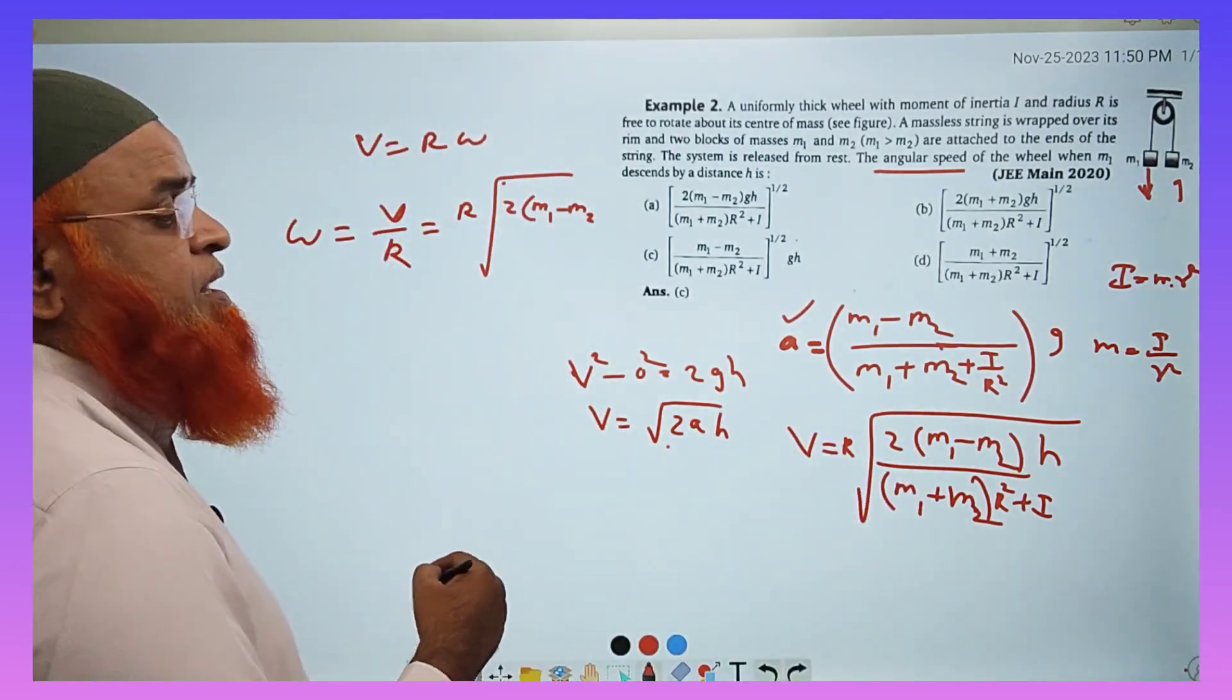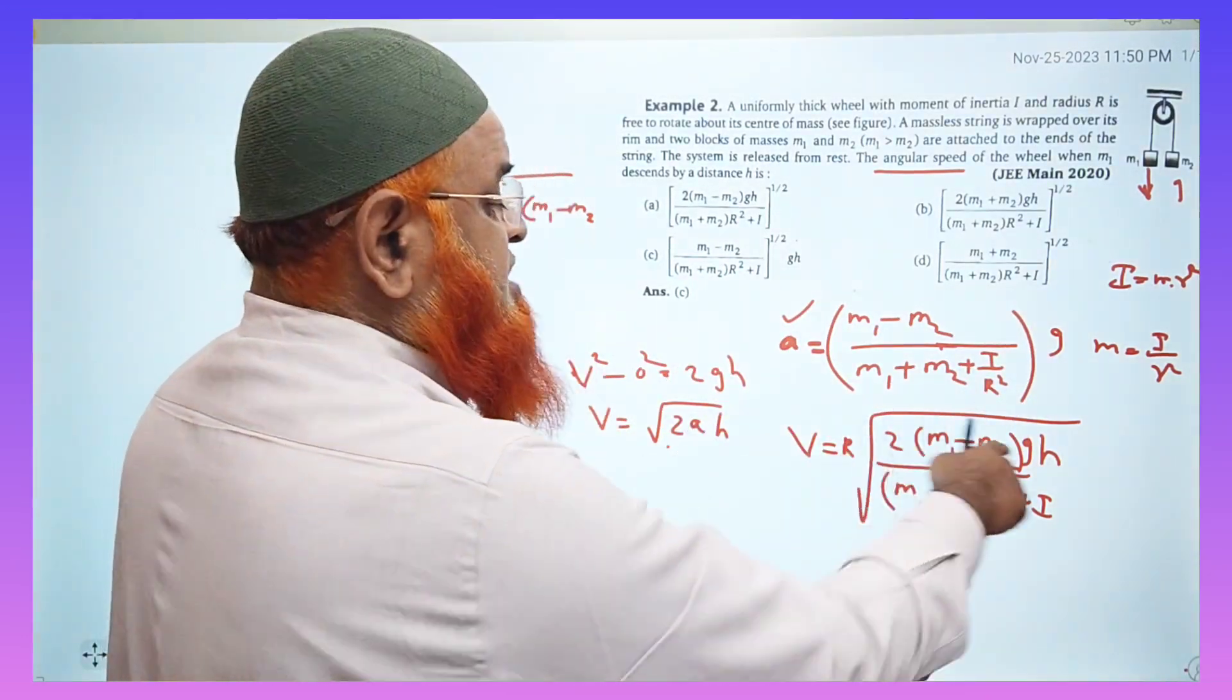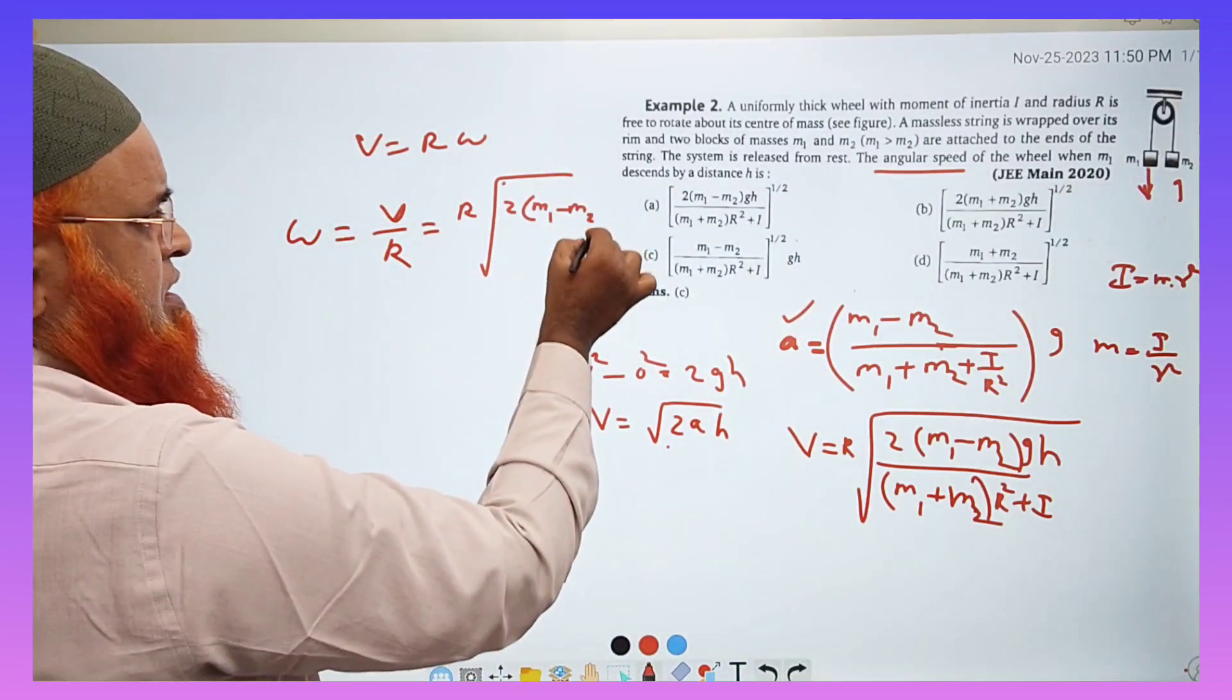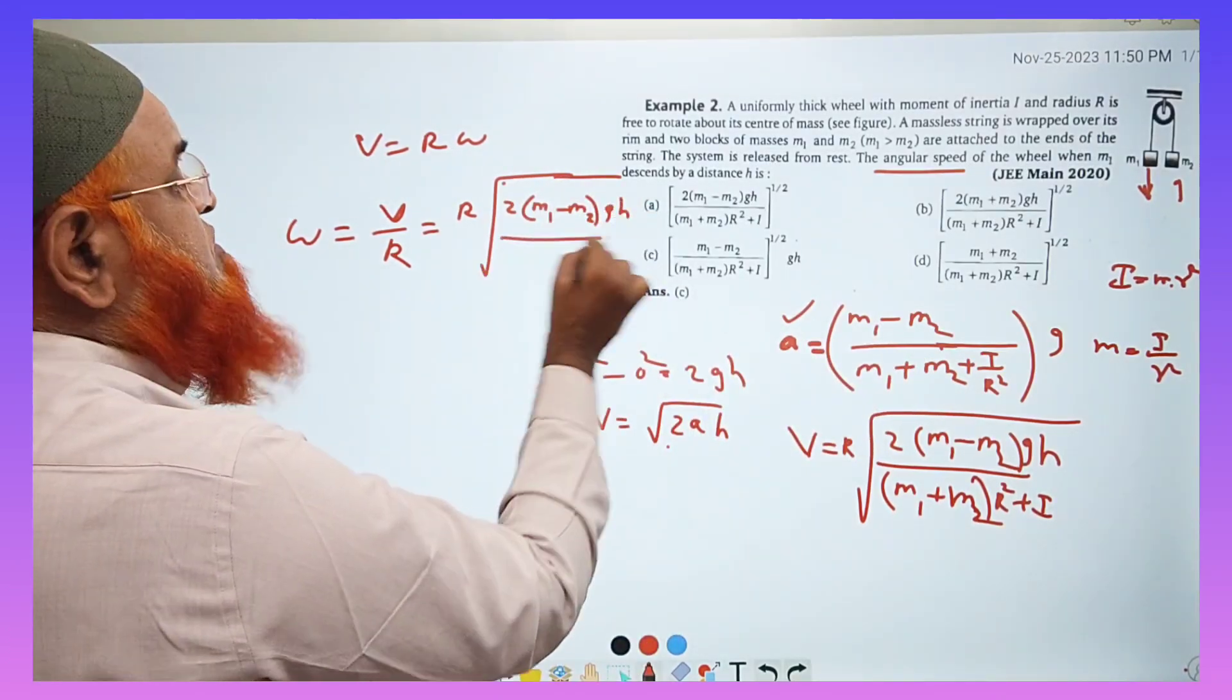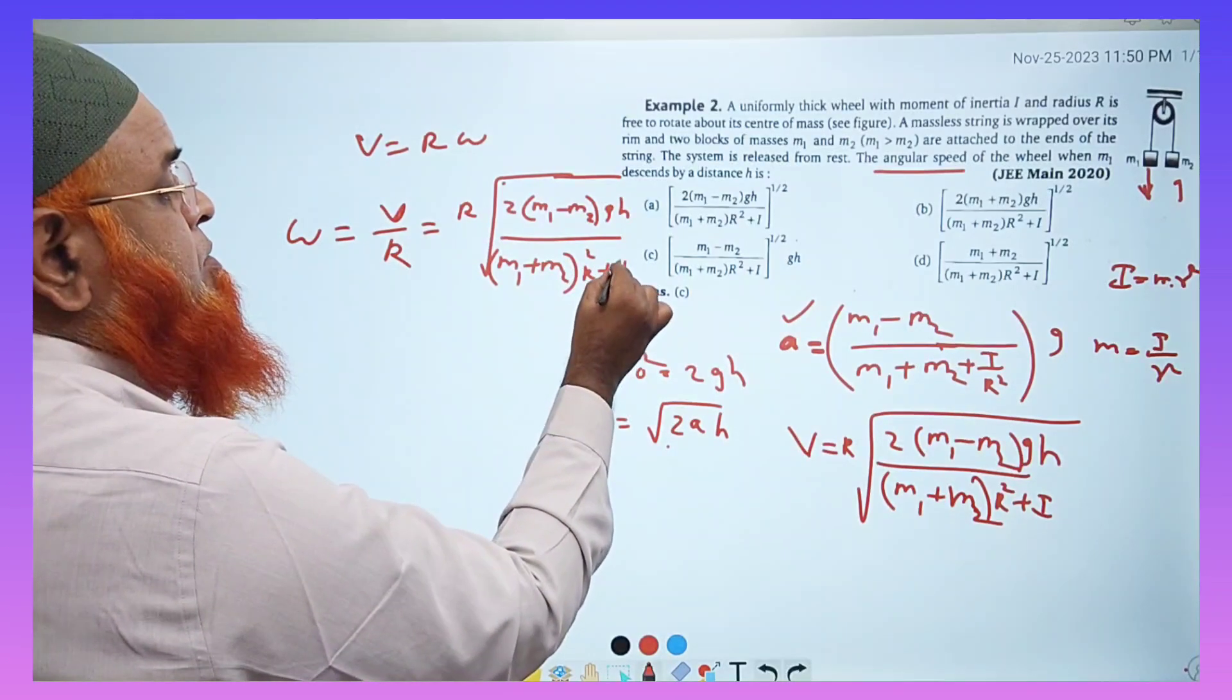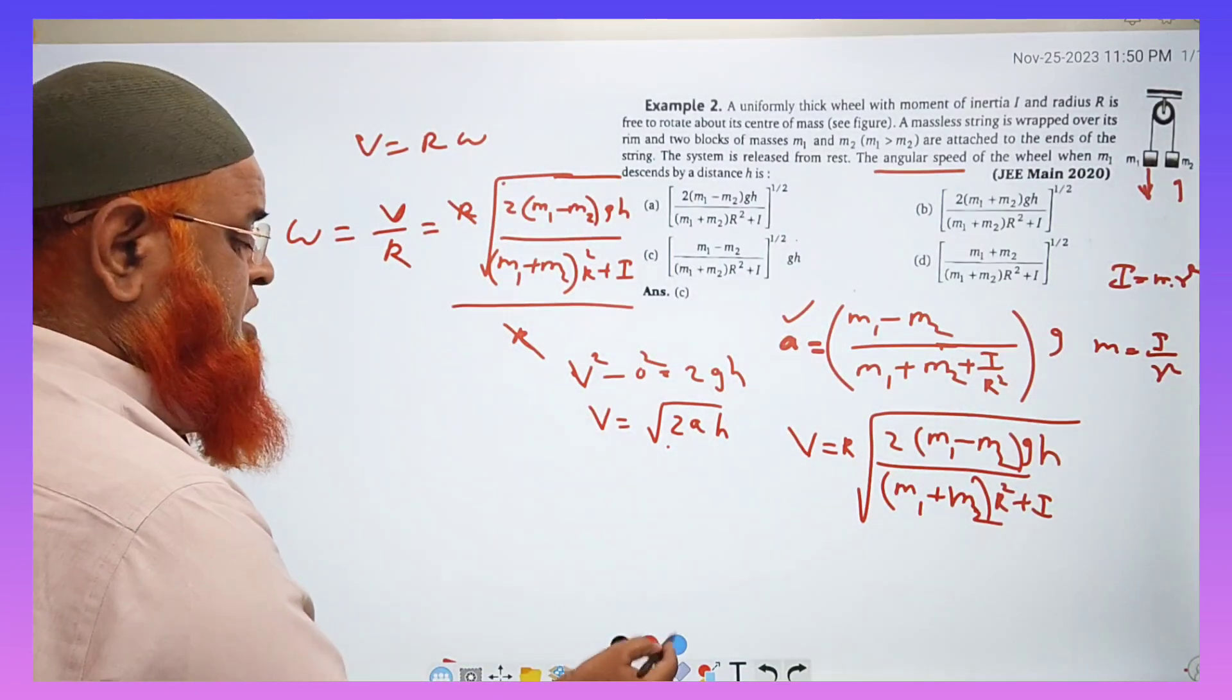You have to write g also here because acceleration there was g, and this is total formula for acceleration, this is h here. Now what you have to do is omega is equal to v by r, so what is m1 minus m2 and gh divided by m1 plus m2 into r square plus I, whole divided by r. So with this, these two get cancelled, and this is going to be the left out part. You can just see which is going to tally with that.